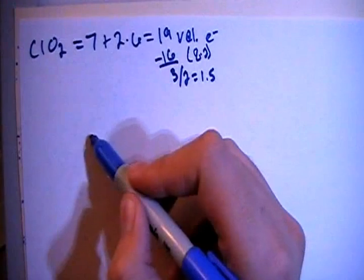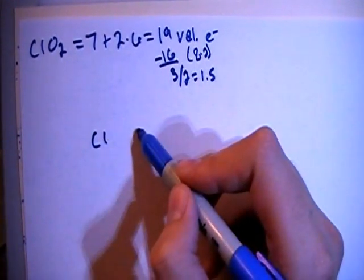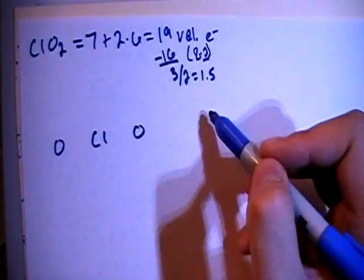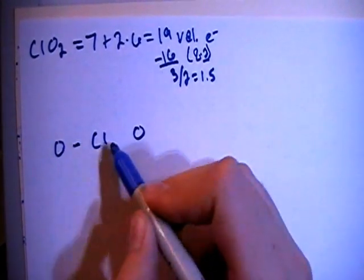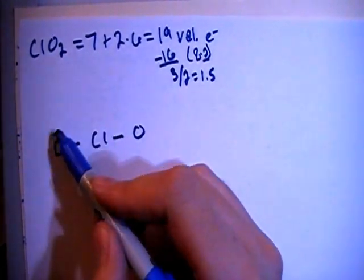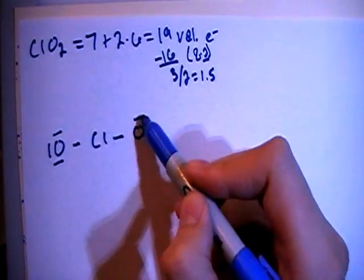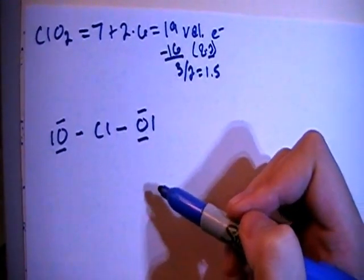So we're going to have the chlorine in the center, surrounded by 2 oxygens, which is what this 2 signifies. So first, let's go ahead and single bond all of them, and then we can fill in the oxygens octet with their other 6 electrons each.